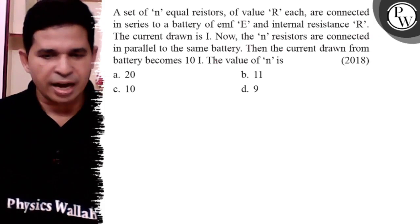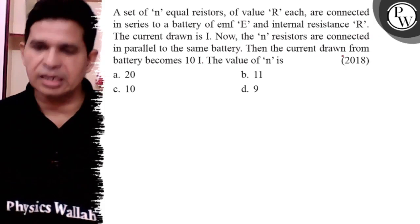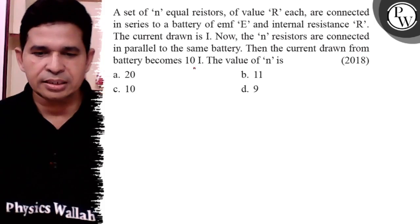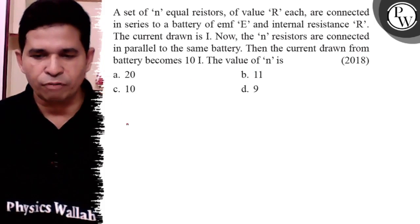Now N resistors are connected in parallel to the same battery, then the current drawn from the battery becomes 10I. The value of N is?